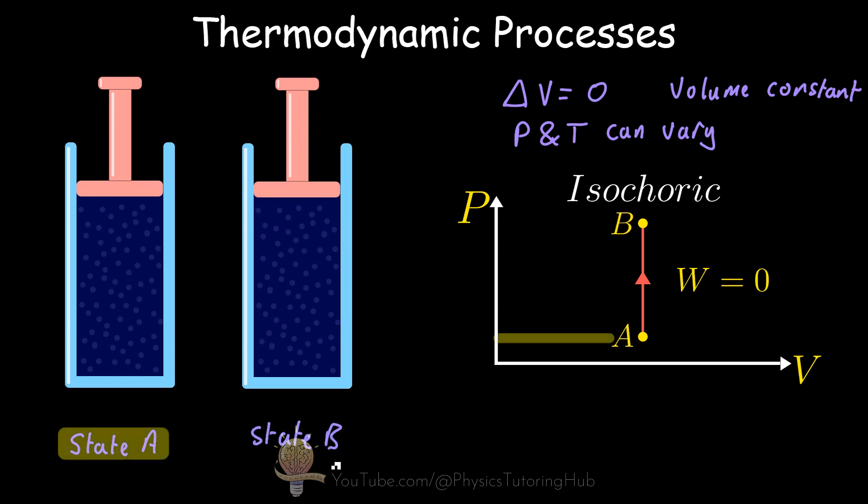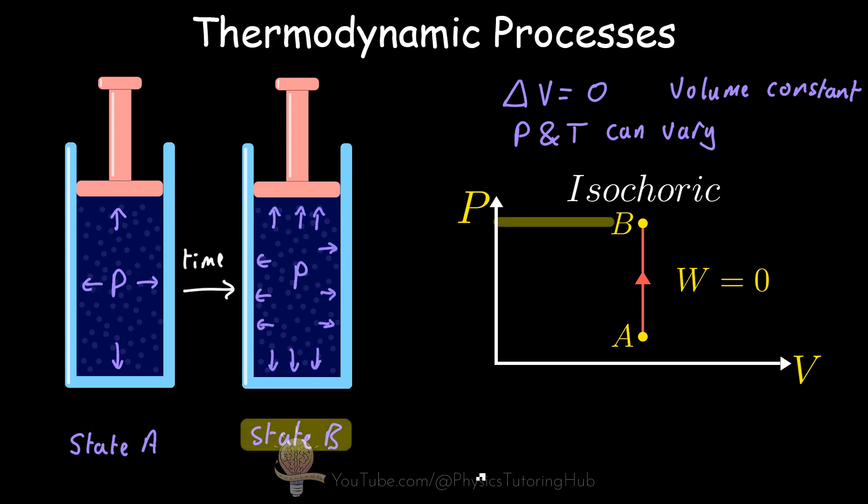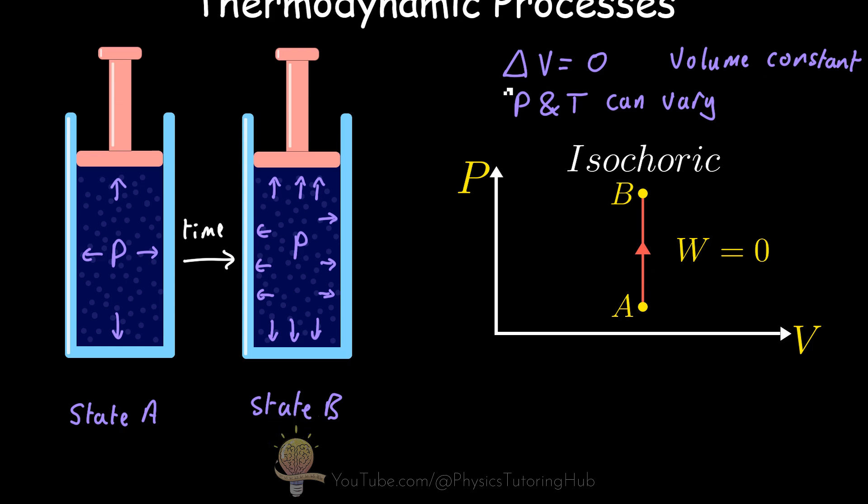In state A we have a lower pressure, and over time we're moving to state B, which you can see from this arrow here pointing up to state B. Notice that state A and state B have the same volume; only the pressure increases on the PV diagram. As the pressure increases, the temperature will also increase for an ideal gas.